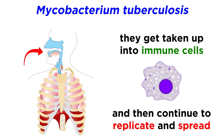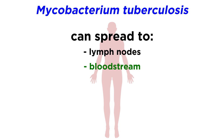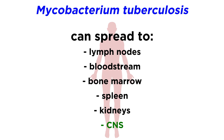In some cases, the bacteria can spread to lymph nodes, through the bloodstream, or to other tissues such as bone marrow, spleen, kidneys, or even the central nervous system.